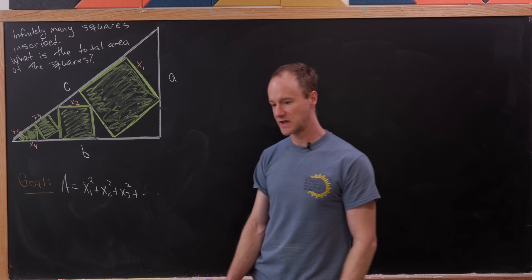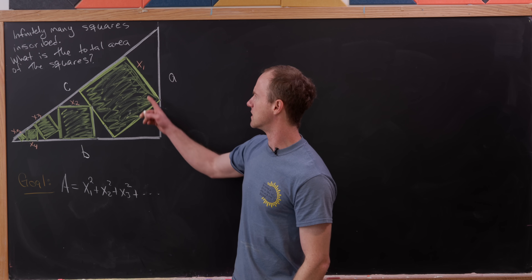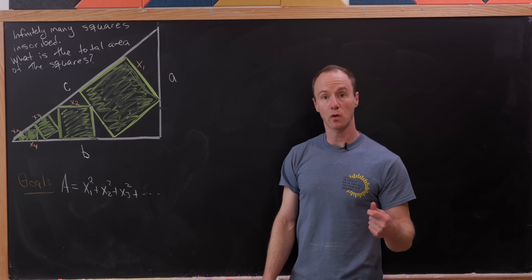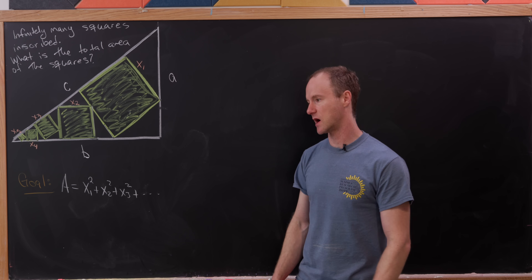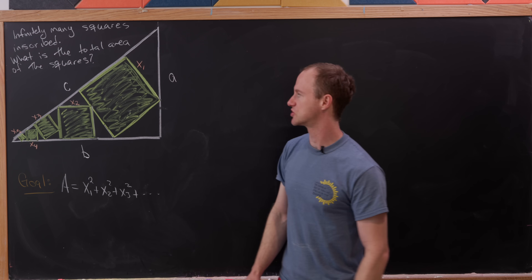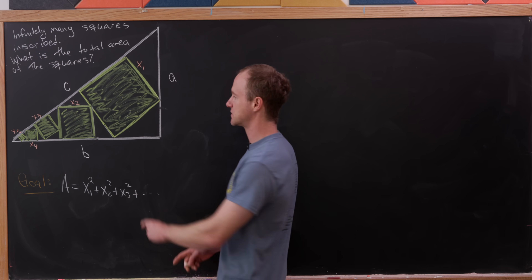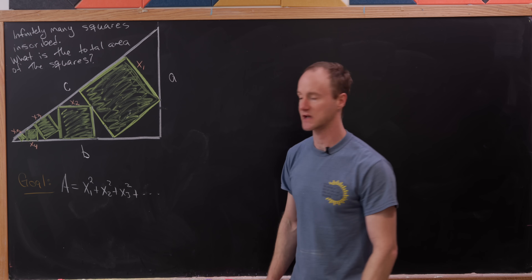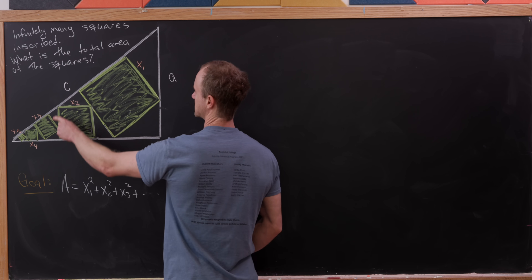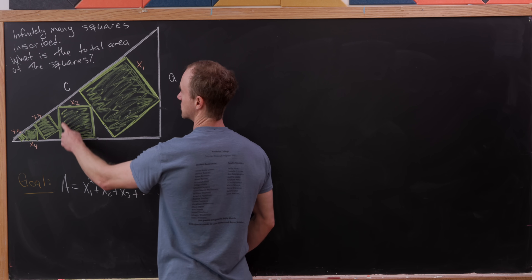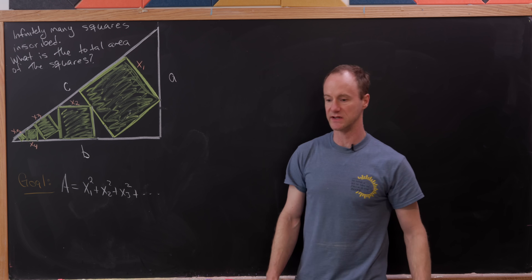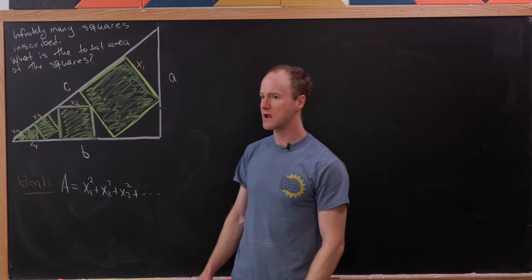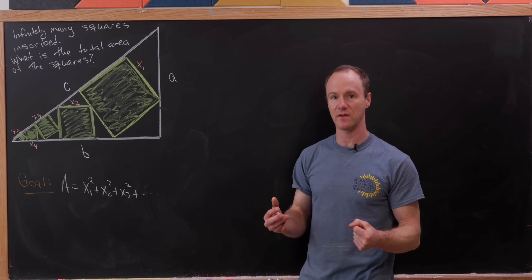Something important to notice is that the side of the square always ends up being the shortest side of the next triangle. Our largest square has side length X1, and the next triangle has shortest side X1. The next square has side length X2, and the shortest side of the remaining triangle is X2 as well. This motivates us to draw the picture of what's happening at the nth step.